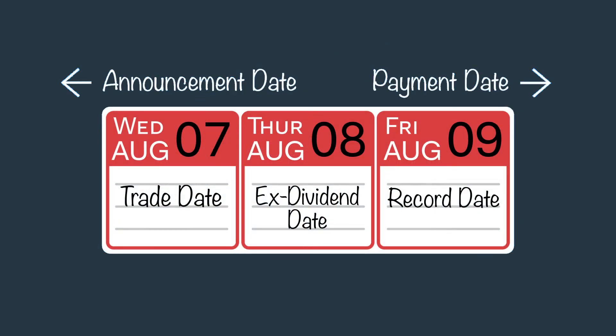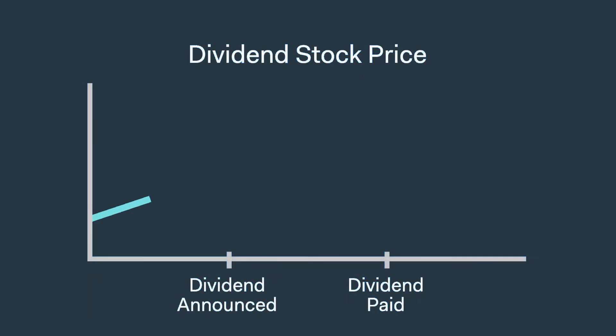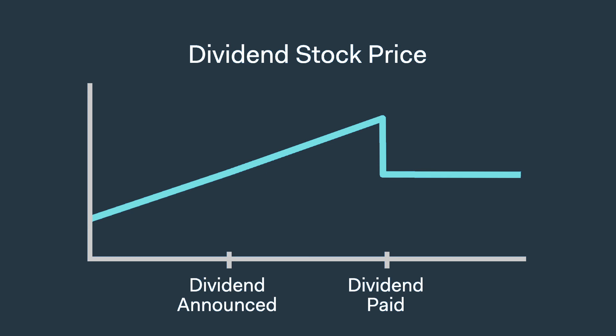Stock dividends follow the same date sequence described earlier for cash dividends. Dividends not only directly impact your strategy when earned, but they are also important to consider because of the potential impact they can have on the price of the stock. After a cash dividend is paid, the company has less value because of the cash that has been paid out. Because it has the same number of shares outstanding, its stock price should decrease. In a stock dividend, the company has the same value but a greater number of shares outstanding, so its stock price should also decrease. However, these are theoretical price movements, and market forces tend to alter this theoretical price impact.